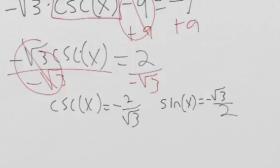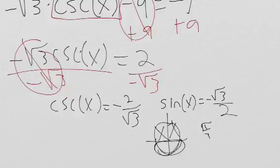Negative sine is negative down here, in these quadrants. Our reference angle is going to be π/3 because sine of π/3 is root three over two.